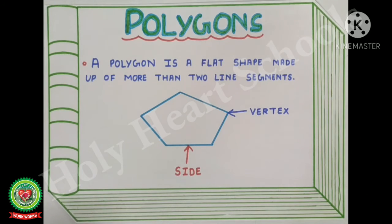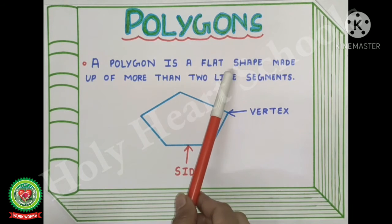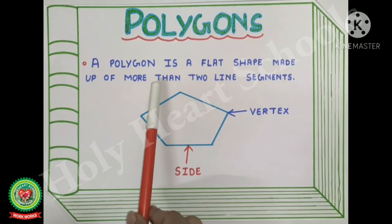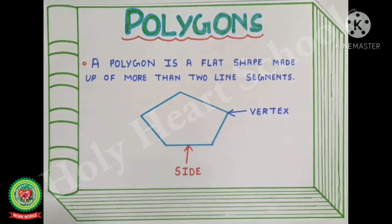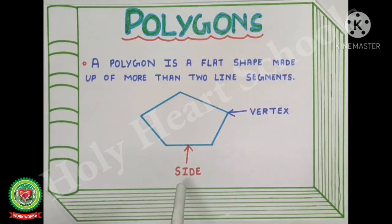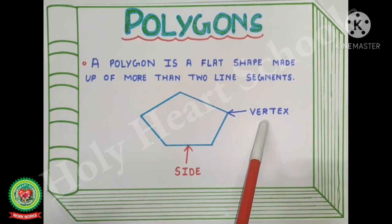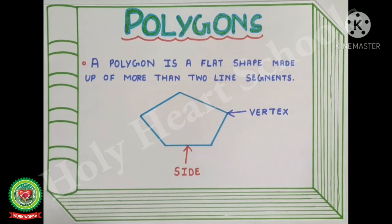Let's understand the meaning of polygons. A polygon is a flat shape made up of more than two line segments. The line segments that form a polygon are called the sides of the polygon. The intersection of two sides is called a vertex of the polygon. Remember: a polygon is made up of more than two line segments.